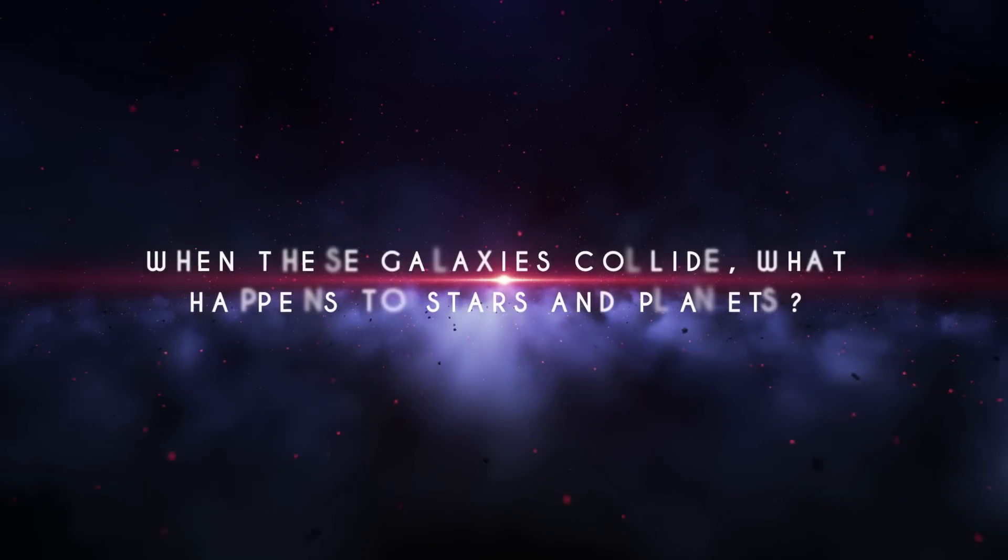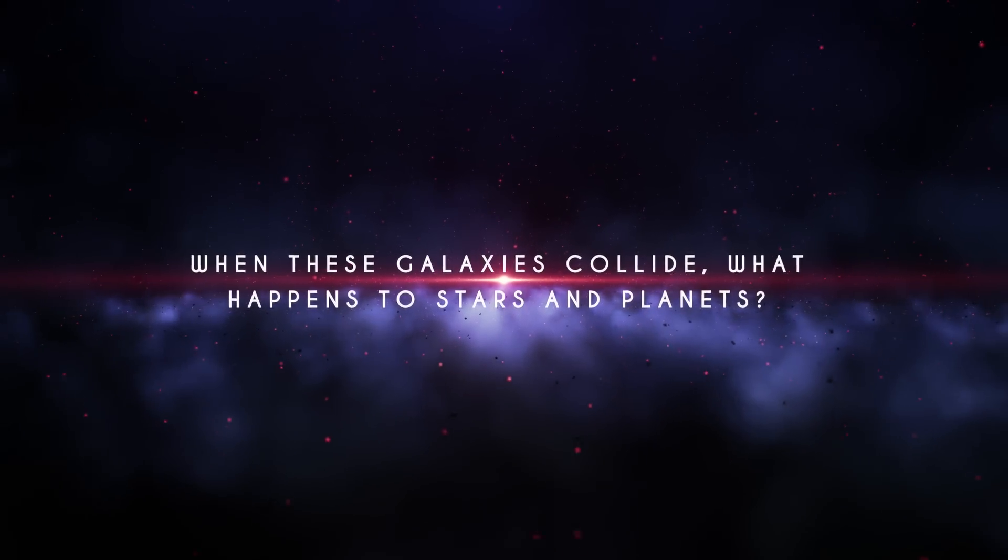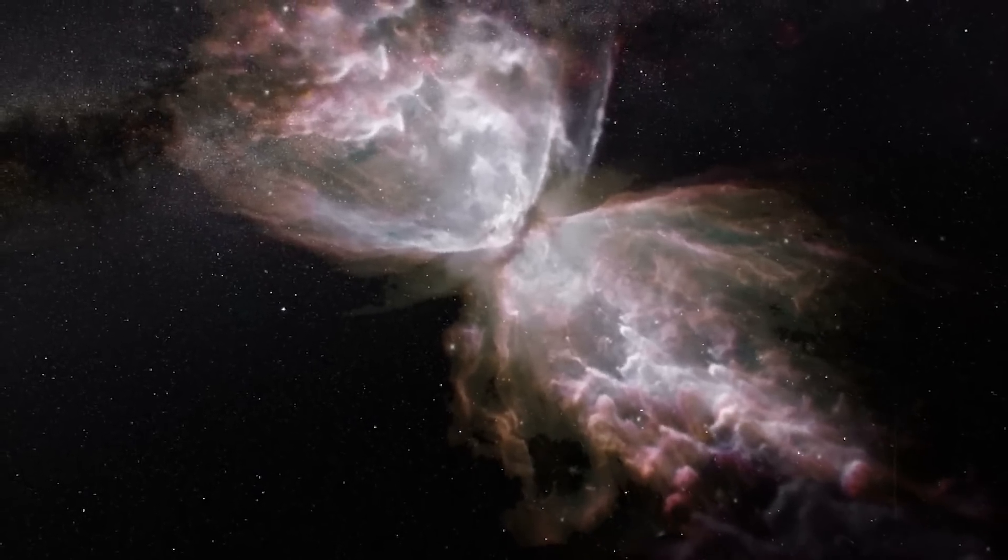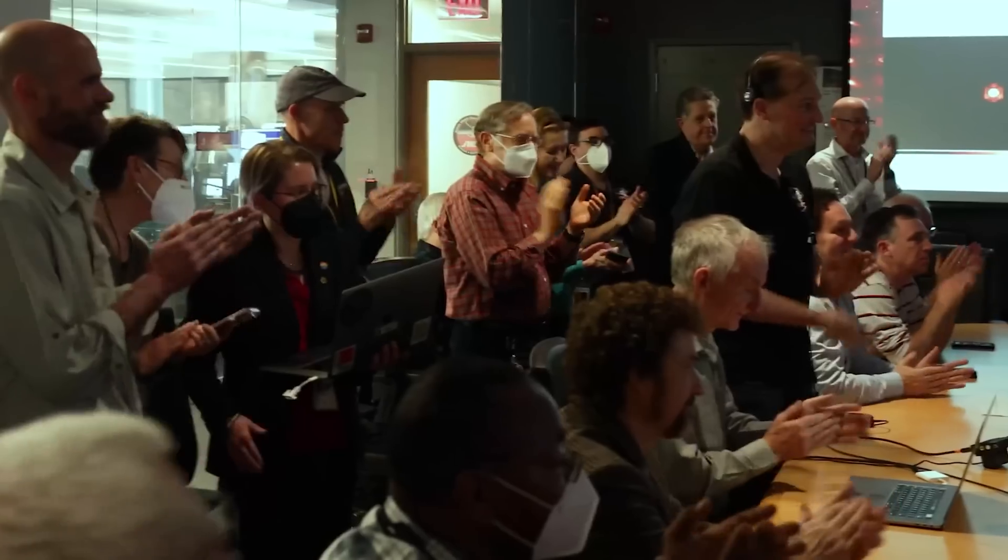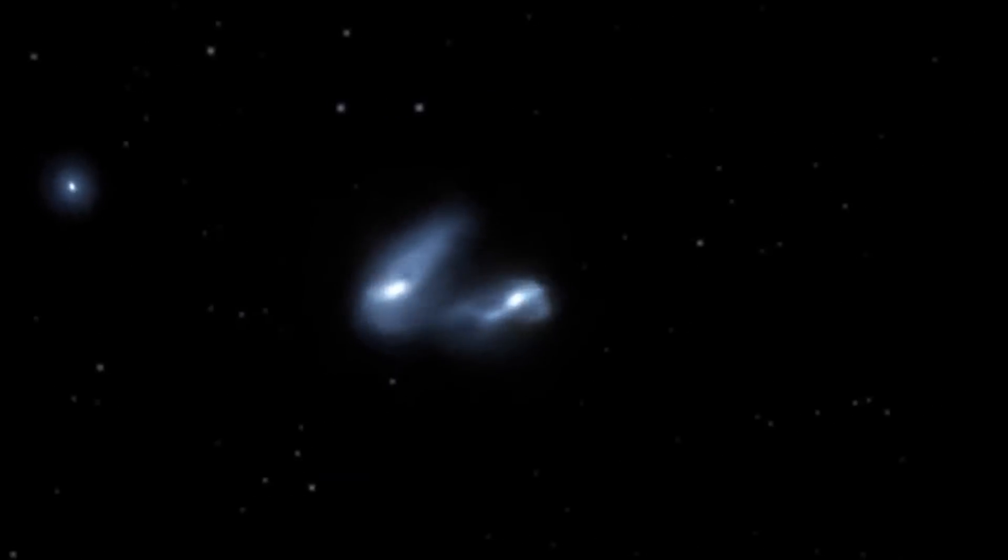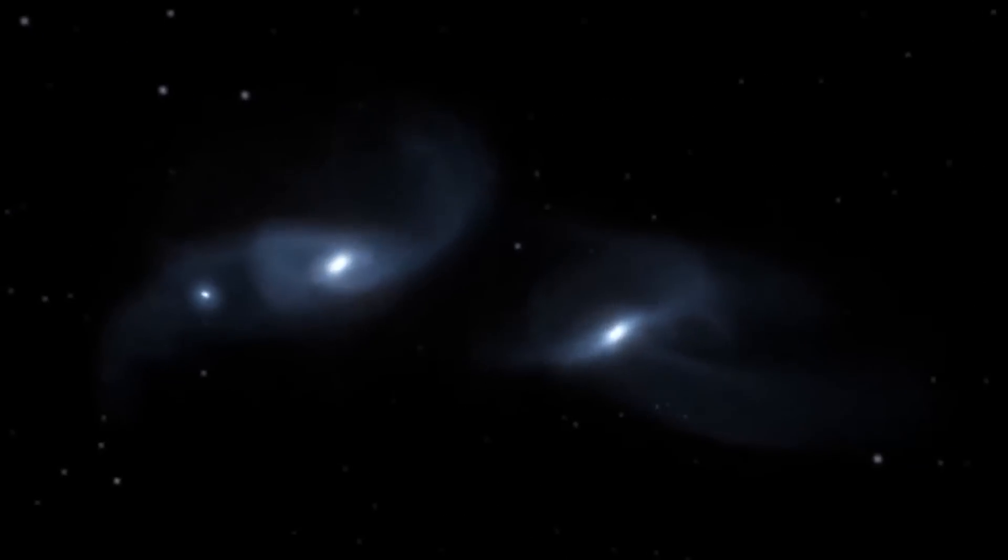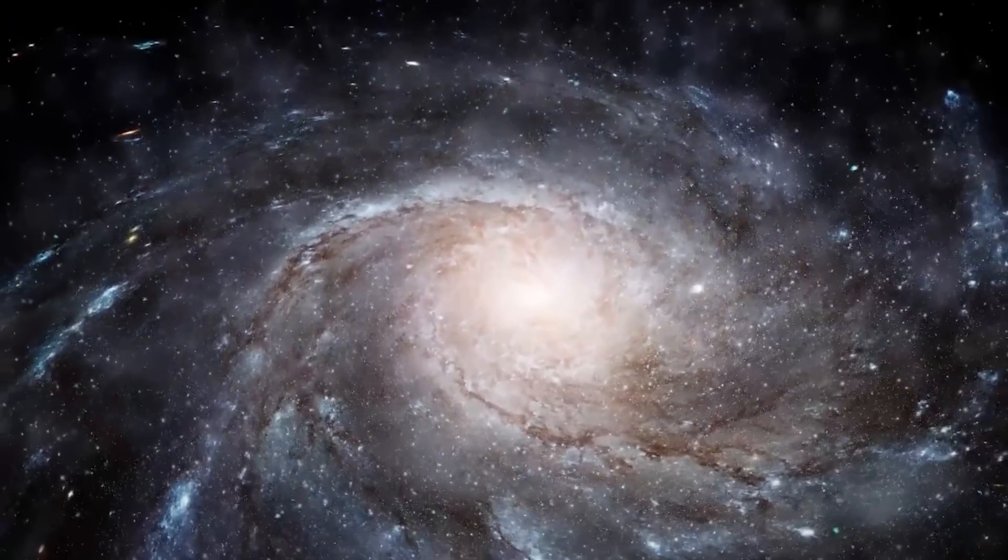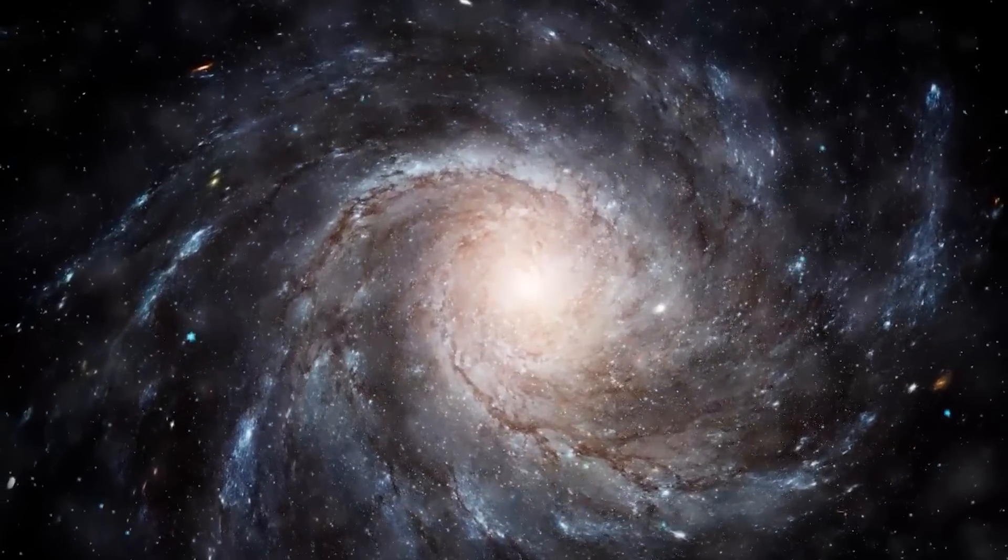When these galaxies collide, what happens to stars and planets? Throughout the universe, galaxies collide with one another. Astronomers use sophisticated telescopes to observe galactic collisions or their aftermaths. In some ways, when two galaxies combine, they are like ghosts, they just pass through each other. This is due to the vast distances between stars within galaxies.